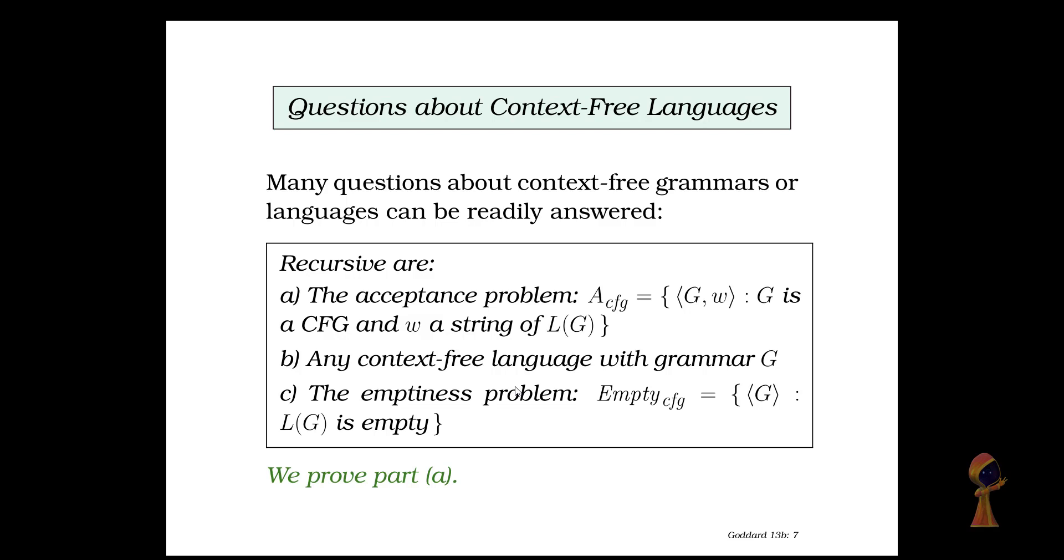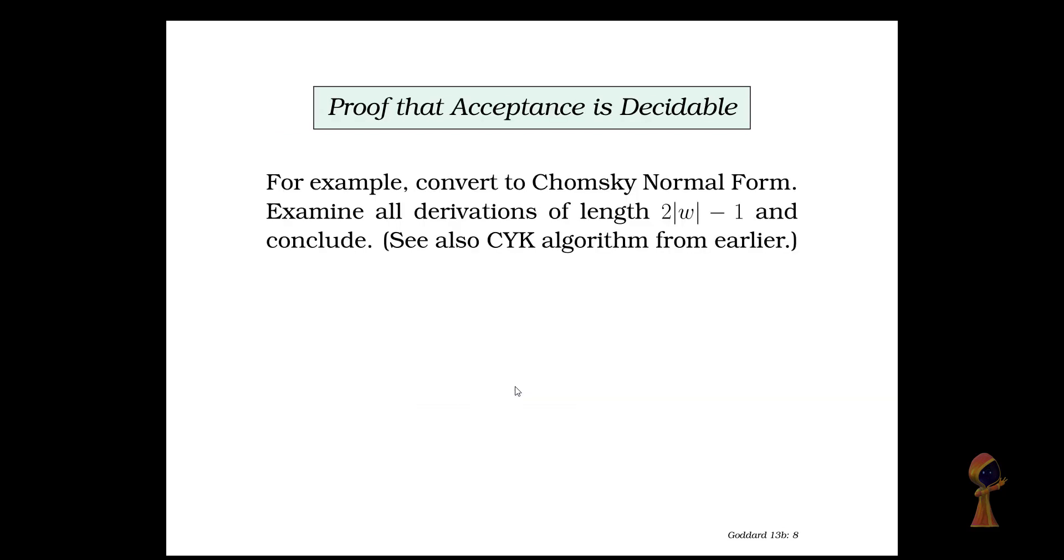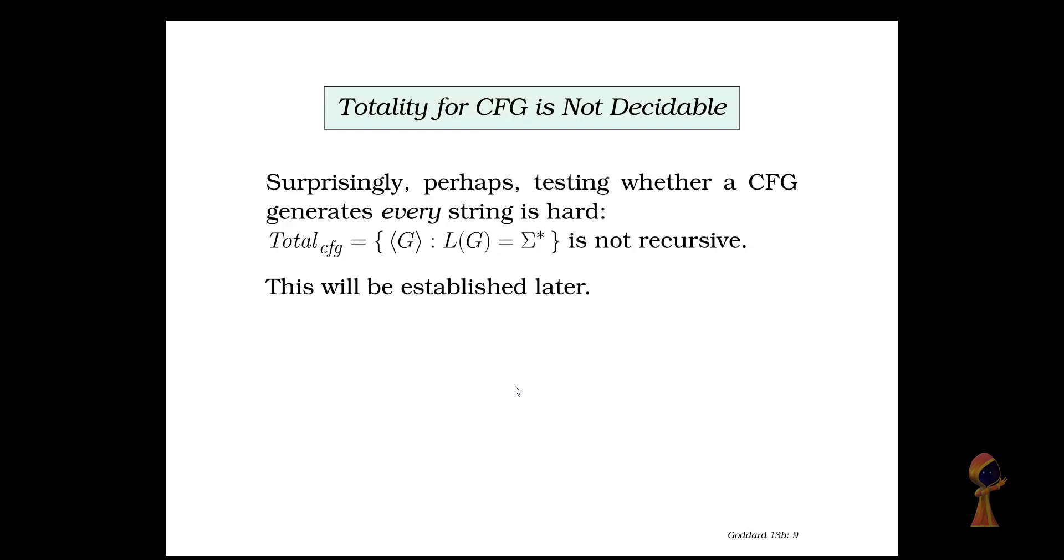Then the emptiness problem. Empty context free grammar is a grammar where language is empty. If we want to prove one of these, let's say part A, we can convert the grammar to CNF which is Chomsky normal form, and then check all the derivations of length W minus 1, and then conclude. For example, write G on the tape, pass the program in the first step, and so on.